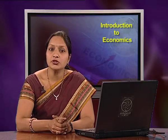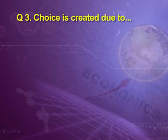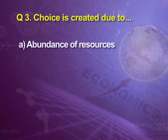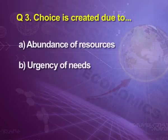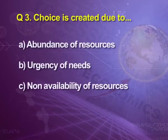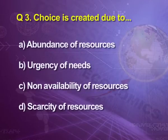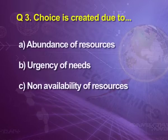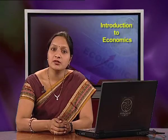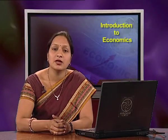Question 3: Choice is created due to — (A) abundance of resources, (B) agency of needs, (C) non-availability of resources, (D) scarcity of resources. The answer is scarcity of resources — we have to make choices because resources are scarce.